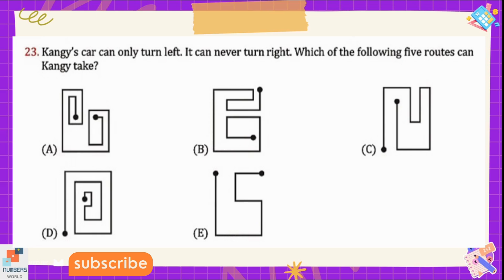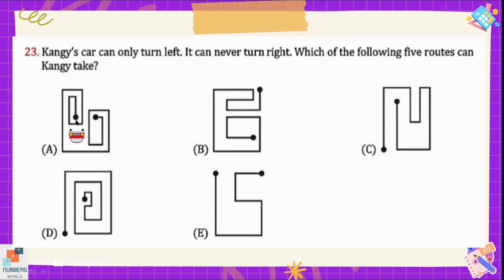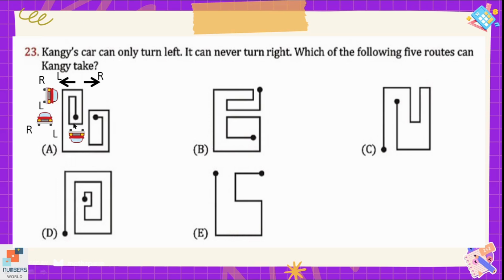Question number 23: Kangi's car can only turn left and can never turn right. Which of the following 5 routes can Kangi take? Starting from the entrance the car moves straight, then takes a left turn. Following the pattern, it takes left turns at each corner. The route of the car will be option A, because in that route all the turns are towards the left side.